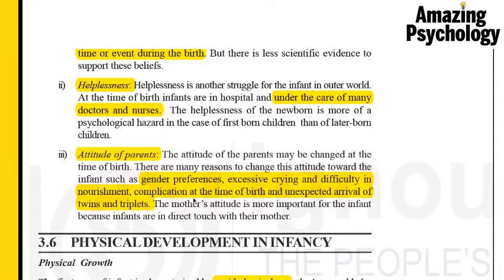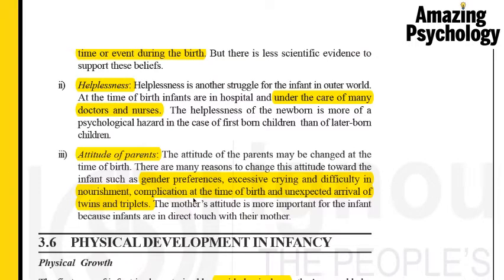The next psychological hazard is the attitude of the parents, which can vary toward the child. For example, the gender of the child — if the parents were expecting a boy and got a girl, that's going to affect their attitude. If the child is constantly crying or has difficulty breastfeeding, that can make parents tired and irritable. If twins or triplets arrive unexpectedly when only one baby was expected, that can also cause financial strain, leading to a less positive parental attitude toward the children.